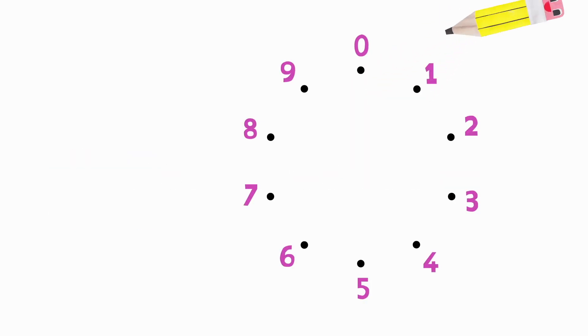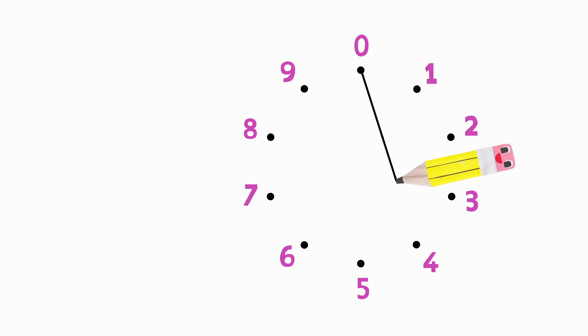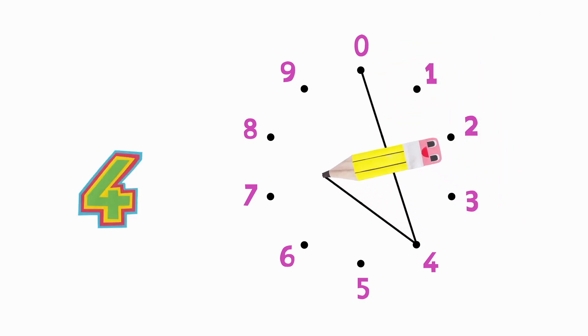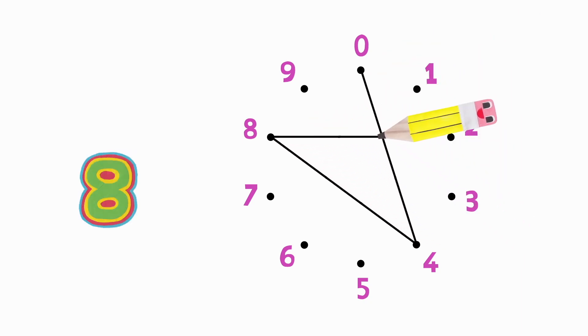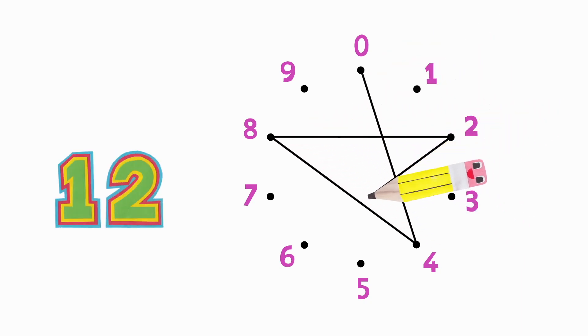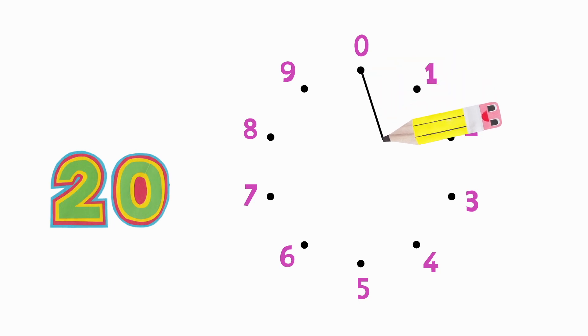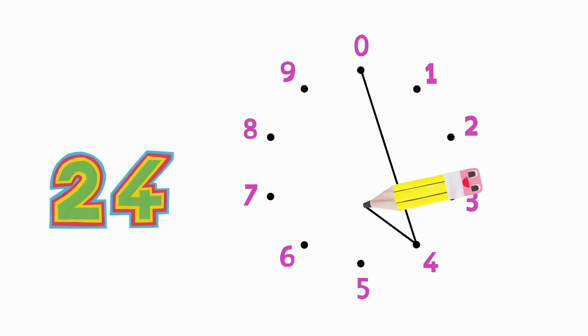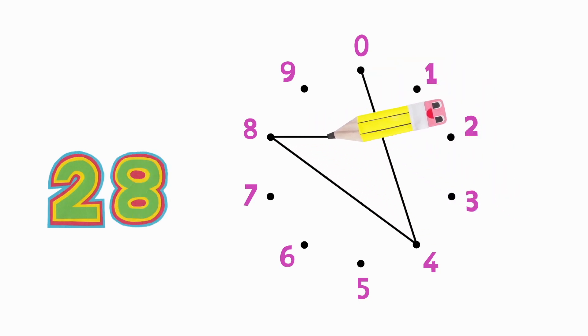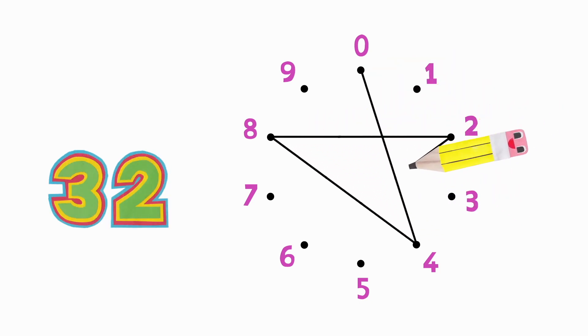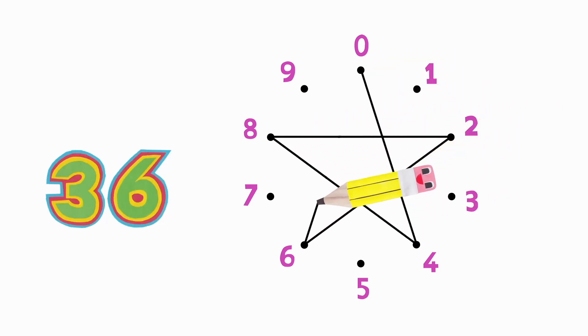Four times table. Four, eight, twelve, sixteen, twenty, twenty-four, twenty-eight, thirty-two, thirty-six, forty.